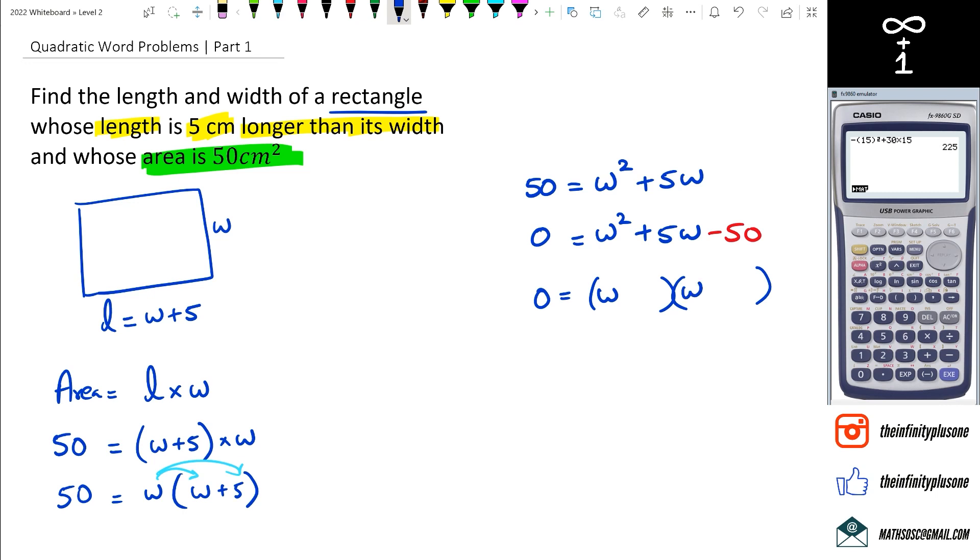So in this case it's going to be positive 10 and minus 5. Now when I do positive 10, so w plus 10 equals 0, I get w equals negative 10. And in the second situation I've got w minus 5 equals 0, and then w is equal to positive 5.